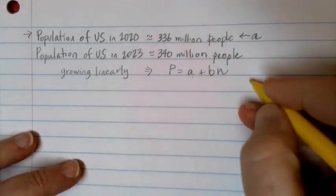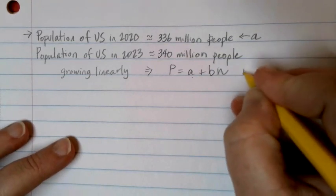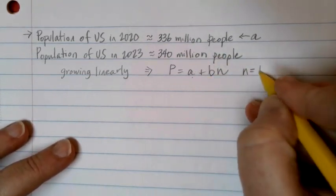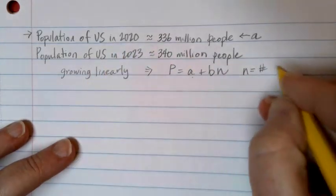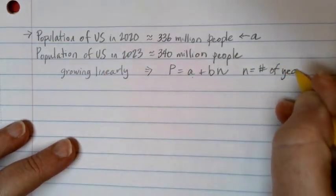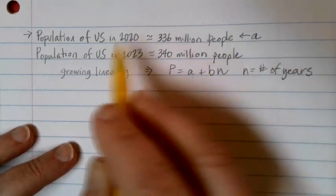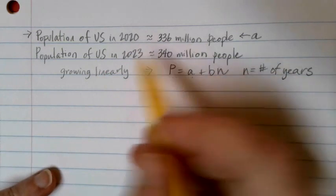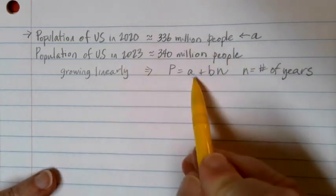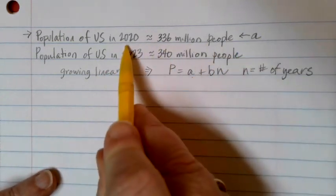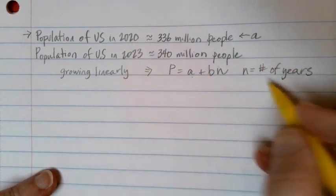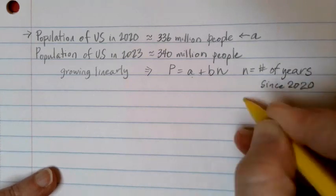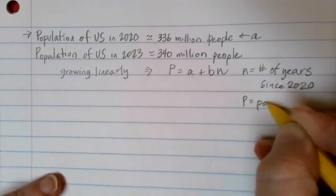Now, this is finding the population over time. N is talking in terms of number of years. However, number of years what, right? We're not going to put the actual year in here. A is our starting value, so it has to be the number of years since that starting value. So N is going to be our number of years since 2020. And P is going to be the population in that year.